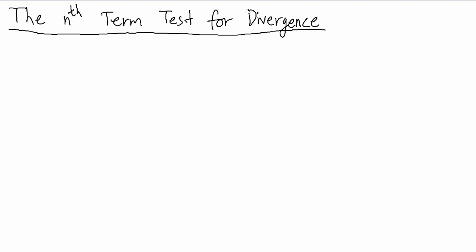In this video, we'll take a look at the nth term test for divergence for a series. This is a very important test. It's always the first one you should try when you're testing series for convergence or divergence, because it's usually going to be the easiest or the quickest.